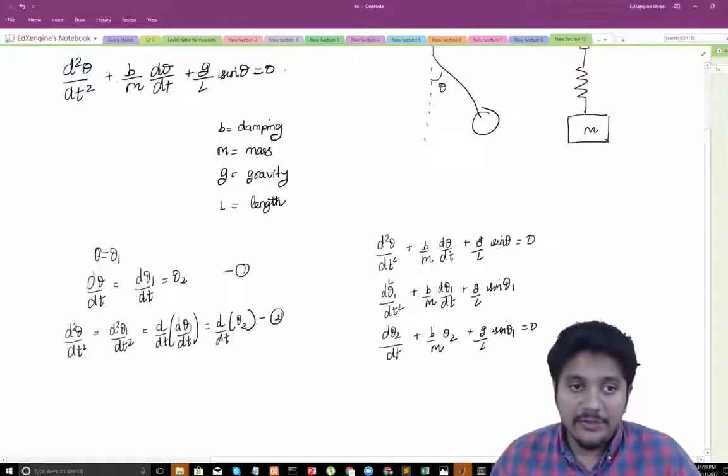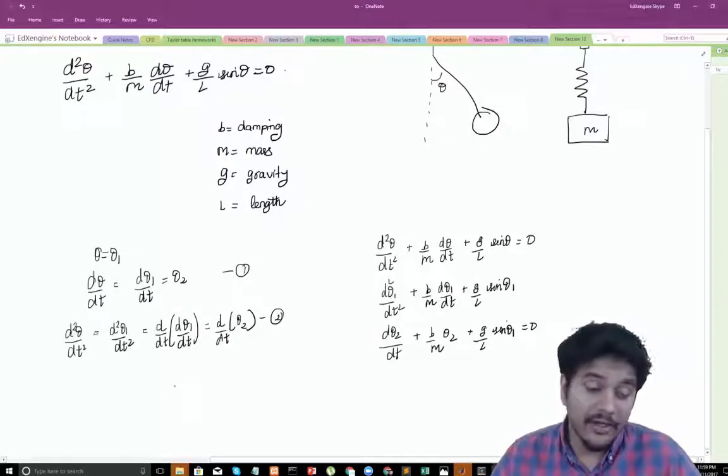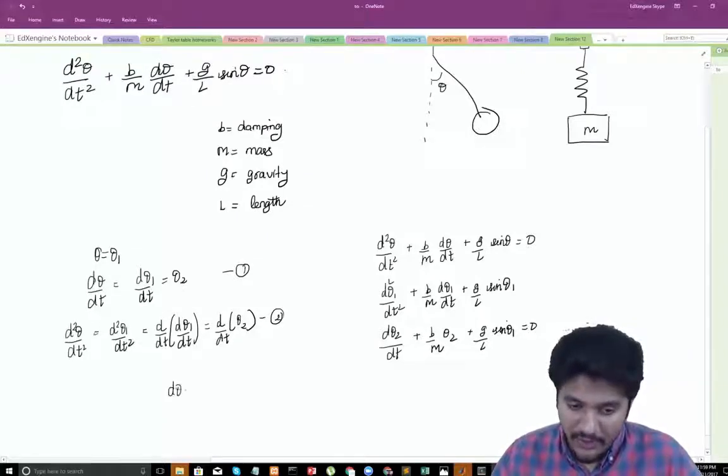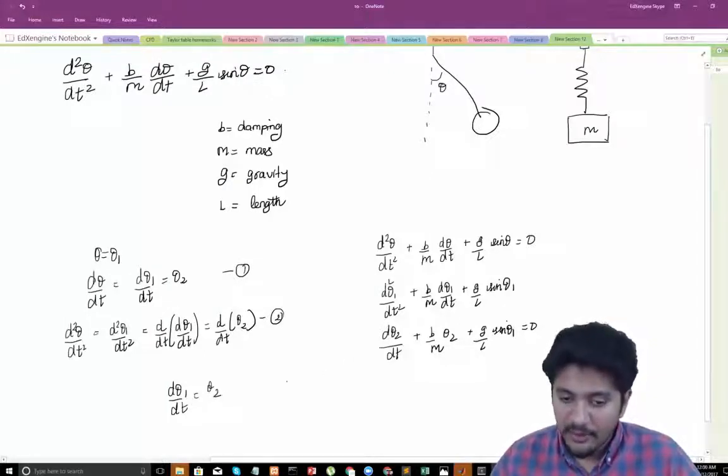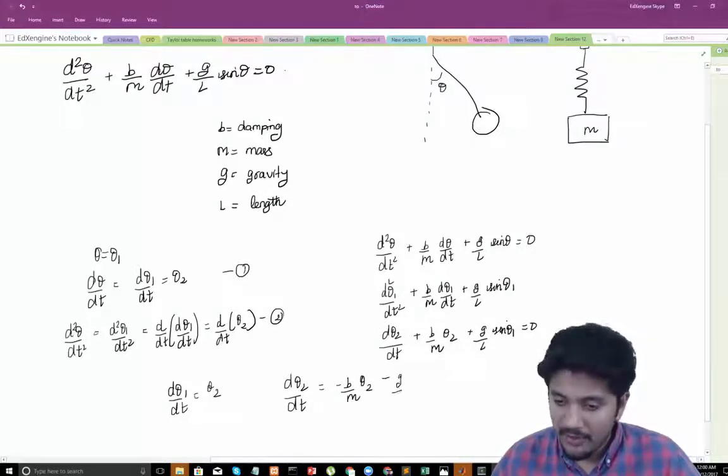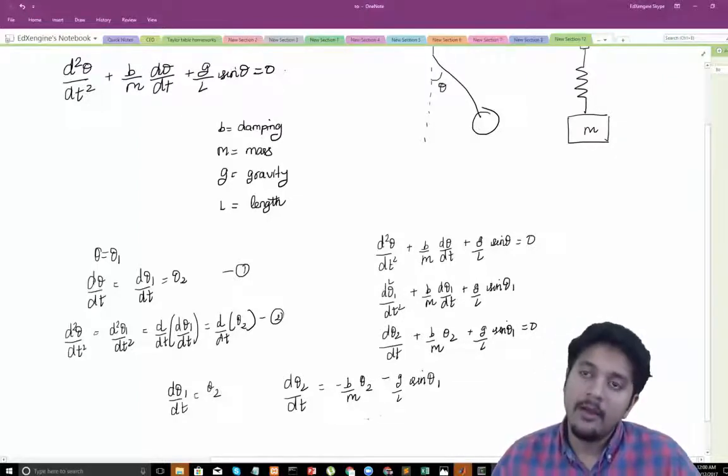So in other words to solve this original second order ODE what I've done is I've created two ODEs. I've created a first ODE which is d theta 1 by dt is equal to theta 2 and the second ODE is d theta 2 by dt is equal to minus b by m theta 2 minus g by l sin theta 1.